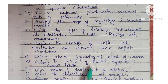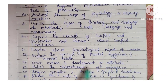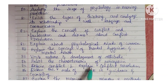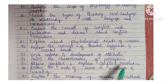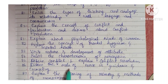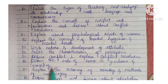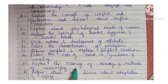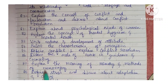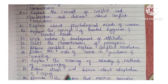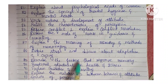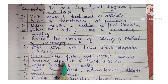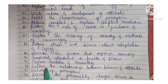Next: explain the concept of mental hygiene and mental health. Next: write the nature and development of attitude. Next: enlist the characteristics of perception. Next: define conflict and explain conflict resolution. Next: discuss the role of the nurse in guidance and counseling. Next: explain the meaning of memory and methods of memorizing. Next: define stress and discuss about adaptation and coping.